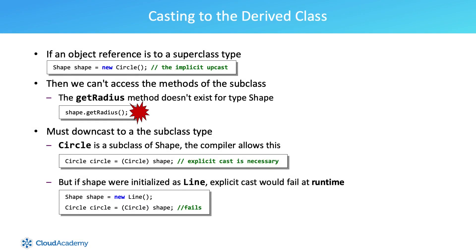Casting to a derived class. There are times, however, that we may need to find out if a generalized reference is really a specialized instance. Consider the following scenario: we instantiate a new circle object, but it is typed as its superclass type — in this case, shape. Then we are unable to access the methods of the circle subclass. The getRadius method doesn't exist for the type shape. Therefore, we must downcast to the subclass type. Circle is a subclass of shape, and the compiler allows this.